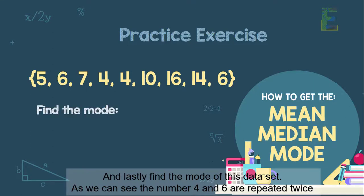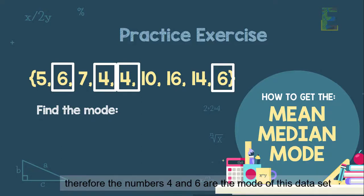And lastly, find the mode of this data set. As we can see, the number 4 and 6 are repeated twice. Therefore, the numbers 4 and 6 are the mode of this data set.